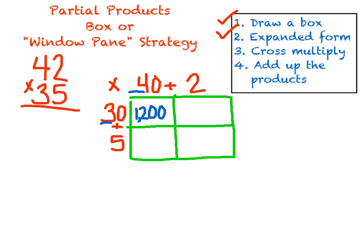Now I'm going to look at my next box. This is going to be 2 times 30. Well, 2 times 3 is 6, but I need 2 times 30, so I have to add a zero. So 30 times 2 is 60.